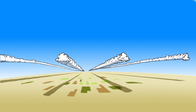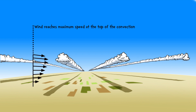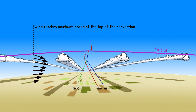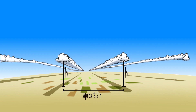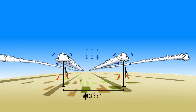One example happens in the flatlands when the wind has its maximum speed at the cloud level and there is a limit to the convection above. In calm conditions the distance between thermal columns is about two and a half times their height. With cloud streets, the distance between the streets will also follow this rule. A circular convective flow is set up, reinforcing the lift along the streets and increasing the inter-street sink.